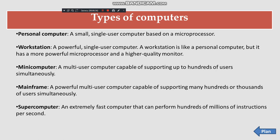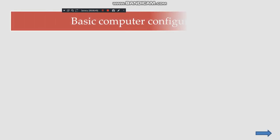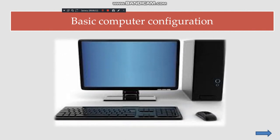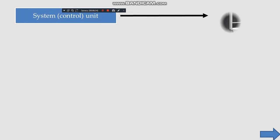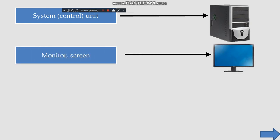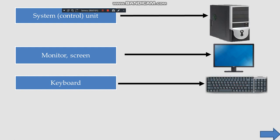The von Neumann computer architecture consists of: memory for holding data and programs, a control unit, input/output, and an accumulator. The basic computer configuration includes a system control unit, monitor screen, keyboard, and mouse.